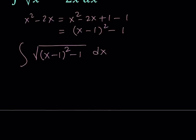Now to be able to integrate this, notice that we have a radical and inside the radical we have something that looks like the square root of x squared minus a squared. When you have an expression like this inside the radical, or in general, you can always use trigonometric substitution.